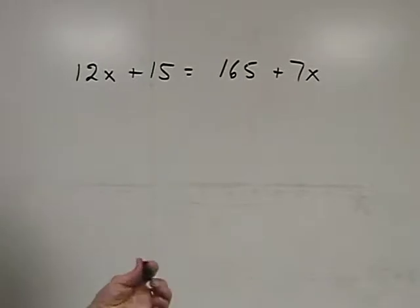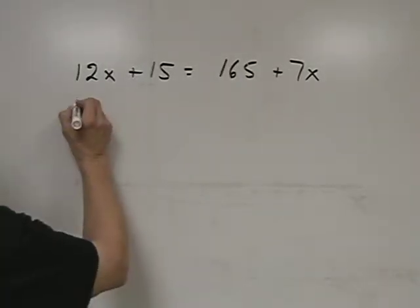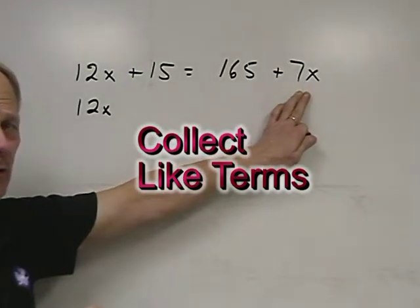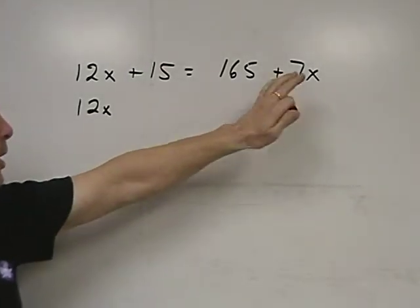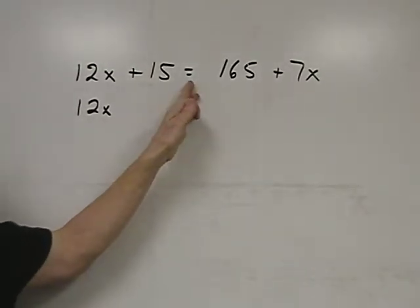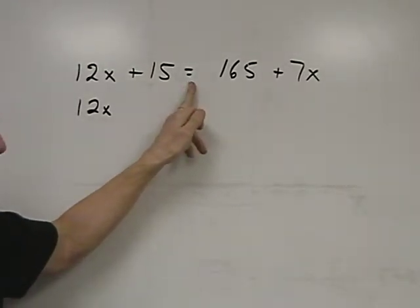So what we have to do is collect like terms. 12x and 7x are like terms. We want to bring the 7x over to this side, right beside the 12x. We have to cross what I call the border, the equal sign.